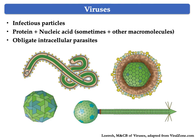All viruses, including the ones depicted in the bottom half of the slide, have an extracellular form called a virion, which is an infectious particle made of protein and nucleic acid. Sometimes viruses also contain carbohydrates or lipids, or both. All viruses are obligate intracellular parasites, meaning that their reproduction depends completely on the cell they have infected.